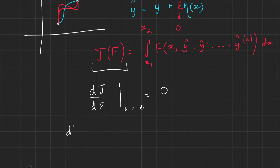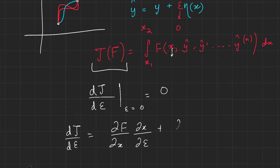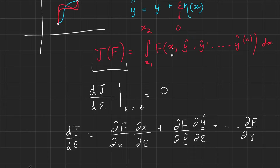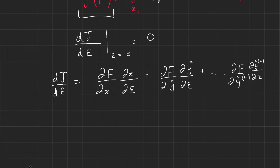The derivative of J with respect to epsilon, by the chain rule, is the derivative of f with respect to each parameter times the derivative of that parameter with respect to epsilon — done for each parameter. So it includes terms like ∂f/∂x times ∂x/∂ε, and then up to ∂f/∂(y_hat⁽ⁿ⁾) times ∂(y_hat⁽ⁿ⁾)/∂ε. Since x is not a function of epsilon, that first term is just zero.